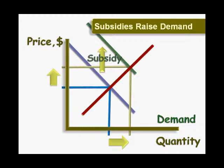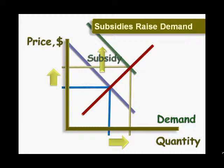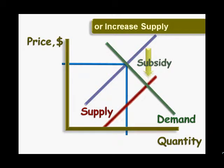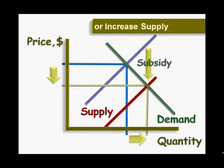The market equilibrium is now at a higher price and a greater quantity. A subsidy paid to producers lowers the cost of production by the amount of the subsidy. The supply curve shifts out, pushing prices down and increasing the quantity produced and consumed.